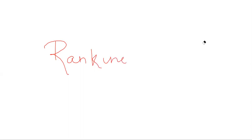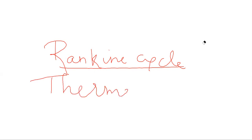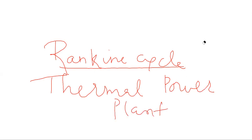The Rankine cycle is a thermodynamic cycle which is an ideal cycle for thermal power plants. In your earlier courses you have studied about a thermal power plant and know its major components. The Rankine cycle is what you get when you idealize the actual processes happening in a thermal power plant — that set of idealized processes constitutes the Rankine cycle.